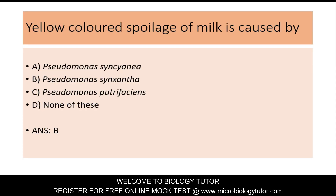Yellow colored spoilage of milk is caused by: A. Pseudomonas syncyanea, B. Pseudomonas synxantha, C. Pseudomonas putrefaciens, D. None of these. Answer is B: Pseudomonas synxantha.